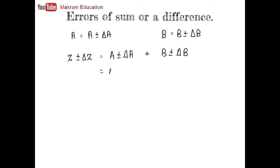Now writing real values aside, that is A plus B, and absolute errors aside, delta A plus minus delta B. We can say that this is your Z and this will be our delta Z. Now focus on this part, error part.